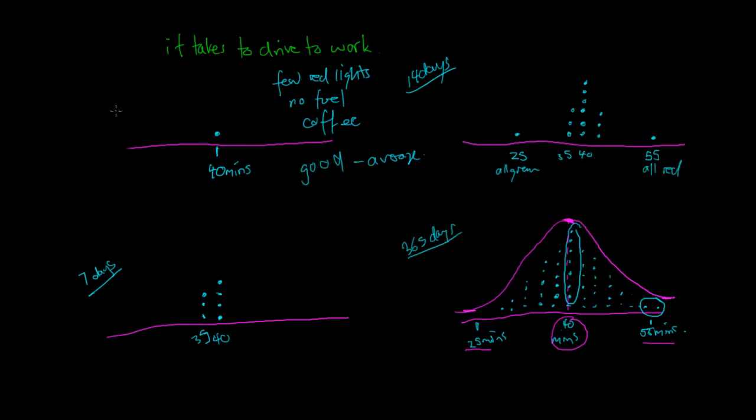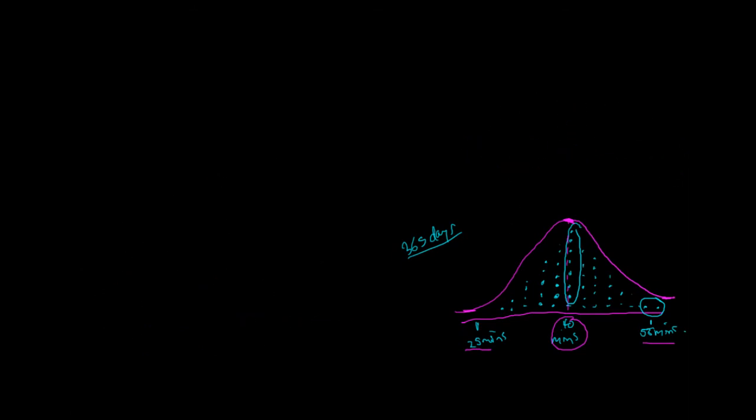I'm going to erase some of this now. If I were to take an infinite number of observations, of course this wouldn't be infinity, but if I were to observe me going to work every day for the rest of my life, and presume I'd keep the same job, I'd get this nice bell curve. And I'd have this average value here at 40 minutes, and that would be the average time it takes me to get to work.